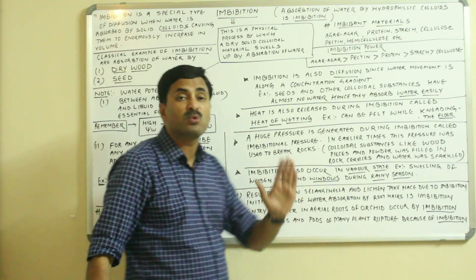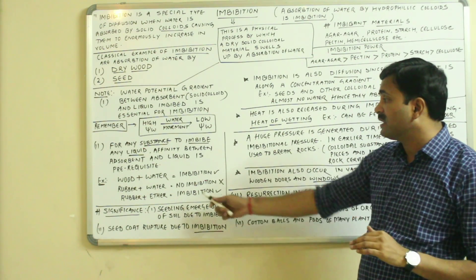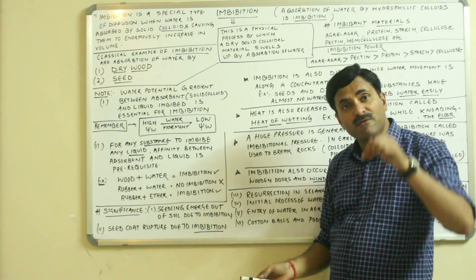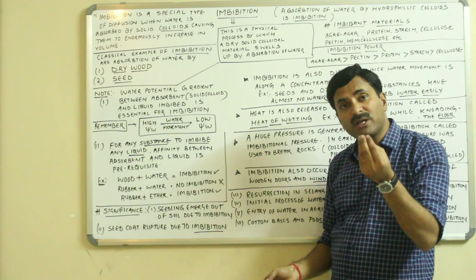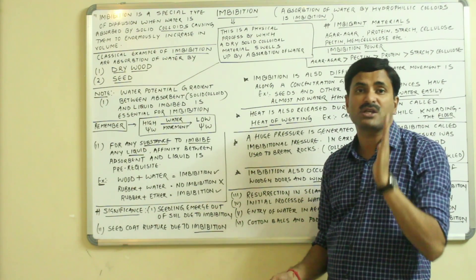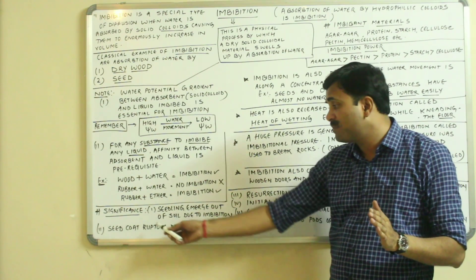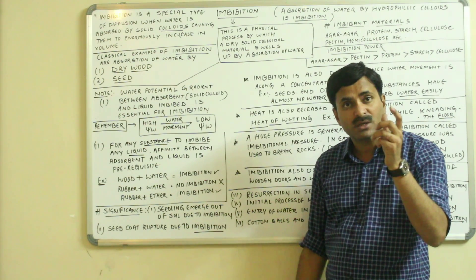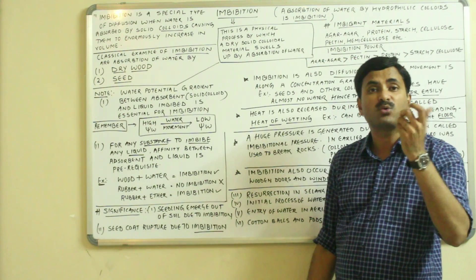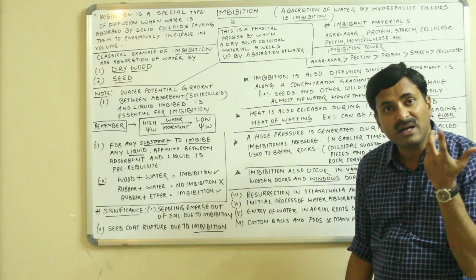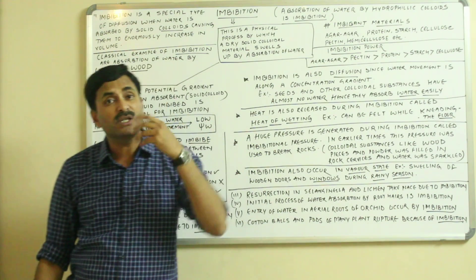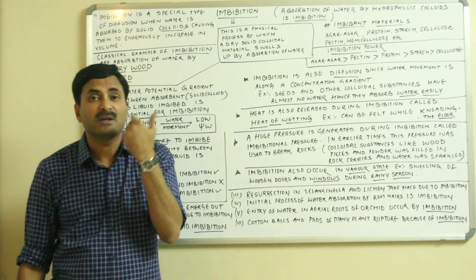Now the significance of imbibition: first, seedlings emerge out of the soil due to imbibition — when you sow a seed in soil, a young seedling comes out because of imbibition. Second, the rupturing of the seed coat — seeds are covered by a seed coat; the outer seed coat is called the testa and the inner is called the tegmen. Even tough seed coats rupture just because of imbibition pressure.